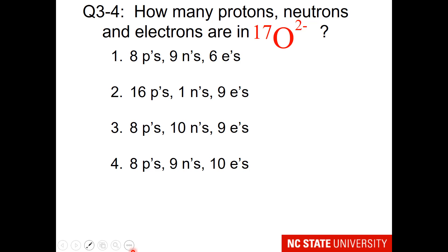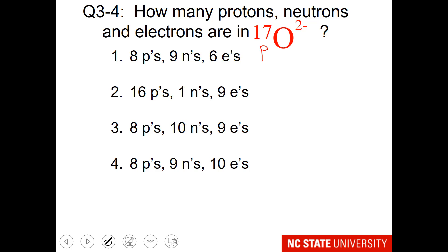Here's one of your first questions: How many protons, neutrons, and electrons are in an oxygen atom with an atomic mass of 17 and a charge of minus 2? Go to the periodic table and look up the number of protons. The number of neutrons equals the atomic mass minus the number of protons, and the number of electrons equals the number of protons minus the charge.